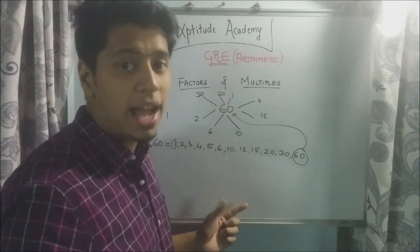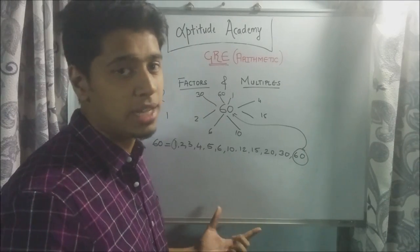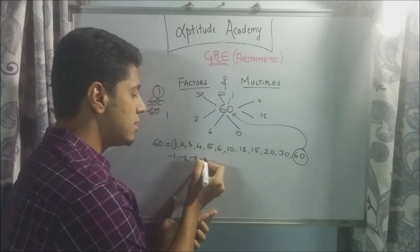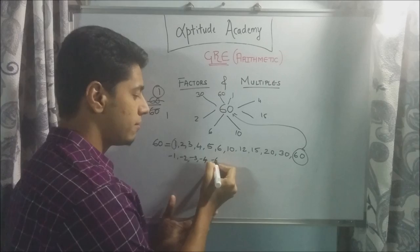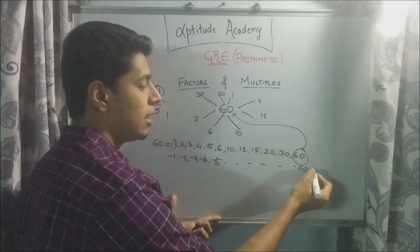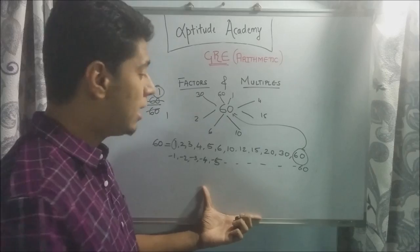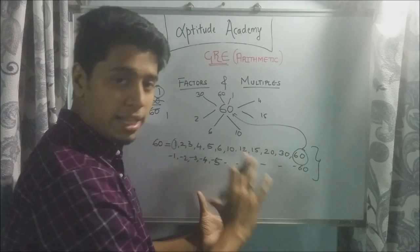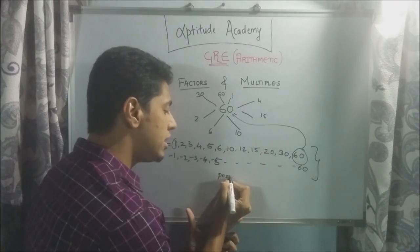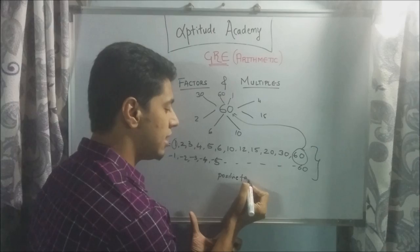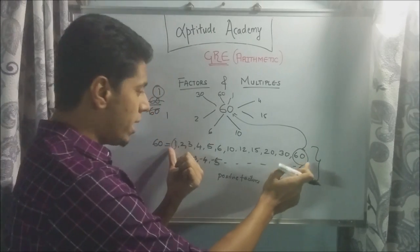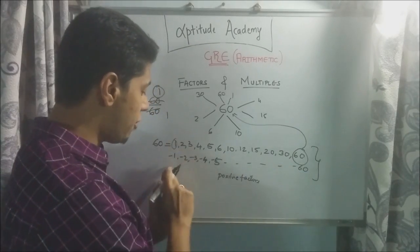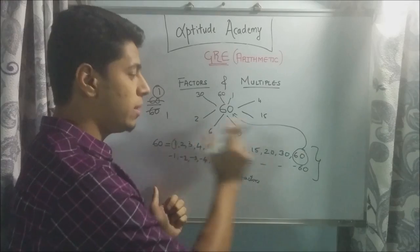Now, as I said, integers are the positive numbers and the negative numbers. So by definition, even these are all factors of 60. Now, in the GRE, just to trick you, they will just say factors. When they say factors, you are supposed to consider the whole list, unless they specifically say positive factors. If they say positive factors, then just consider from 1 to 60. If they just say factors, you are assumed to consider this whole list, from minus 1 to minus 60 and plus 1 to plus 60.